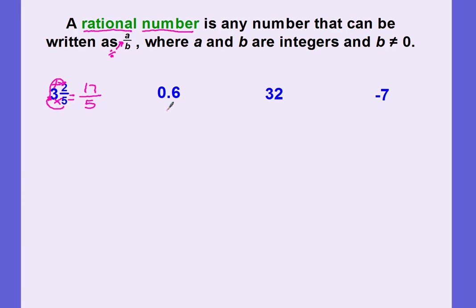What about this decimal? Can we write this in fraction form? We've already learned how to do that. If you read the decimal, it reads 6 tenths — so there you go, it is in fraction form. You could simplify that to 3 fifths if you wanted to, but either way it's still in fraction form. Therefore, decimals are rational numbers.